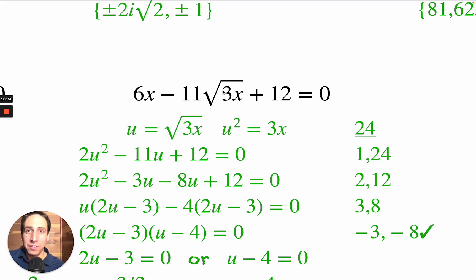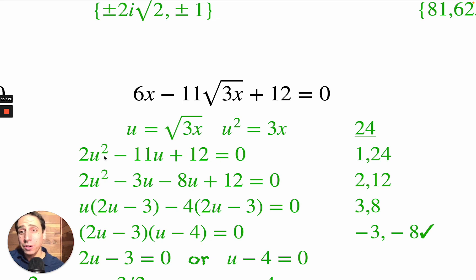When you square both sides, u squared equals 3x. Now 3x and 6x are not exactly the same, but if you double it you get 6x. So 2u squared comes from the 6x term. The equation becomes 2u squared minus 11u plus 12. That's a quadratic — we can split the middle.